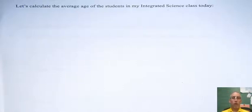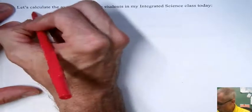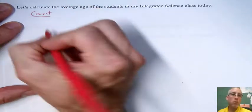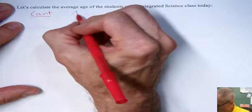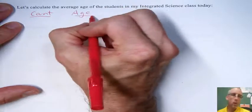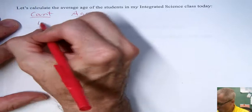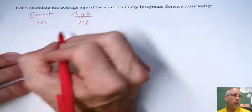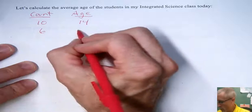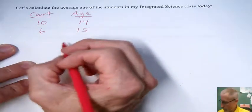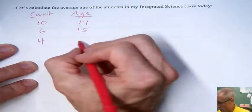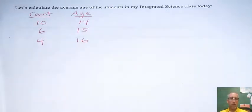Let's say we want to average the ages of the students in one of my integrated science classes. I'm just going to make up some numbers to keep it kind of simple. For example, let's say we have 10 students that are age 14, we have 6 students that are age 15, and 4 students that are age 16. This is pretty artificial, but it'll get my point across.